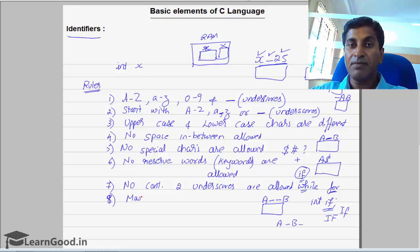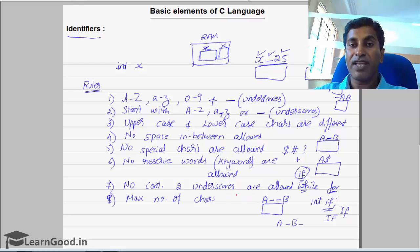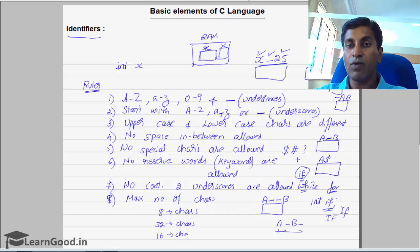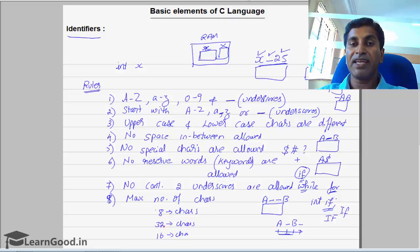The eighth rule: the maximum number of characters in an identifier depends on the compiler. For a Turbo C compiler in a 16-bit OS, you can give a maximum of only eight characters. For Windows-based compilers, you can give up to 32 characters. Some compilers support only 16 characters. So the character limit can be 8, 16, or 32 depending on the compiler. These are the different rules for specifying an identifier.